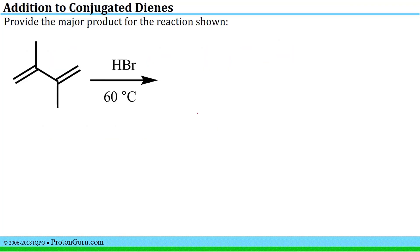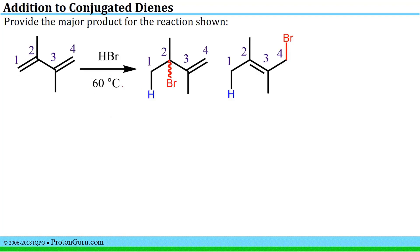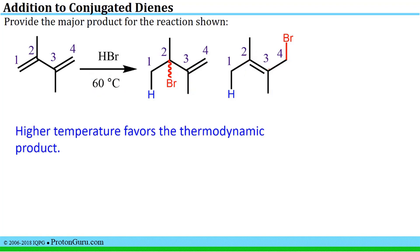If we take the same substrate and do the reaction at an elevated temperature, say 40 or 60°C, we would get the same possible outcomes, but at a higher temperature we favor the thermodynamic product. The thermodynamic product is sometimes the 1,2 and sometimes the 1,4 addition product, so we again have to look at our alkenes. The 1,2 product has 1,2 non-hydrogen substituents — it is a disubstituted alkene. But in the 1,4 addition product, there are 1, 2, 3, 4 things coming off the alkene that are not hydrogens — that's a tetrasubstituted alkene, which is more stable. So because the higher temperature favors the thermodynamic or more stable product, this will be our major product.